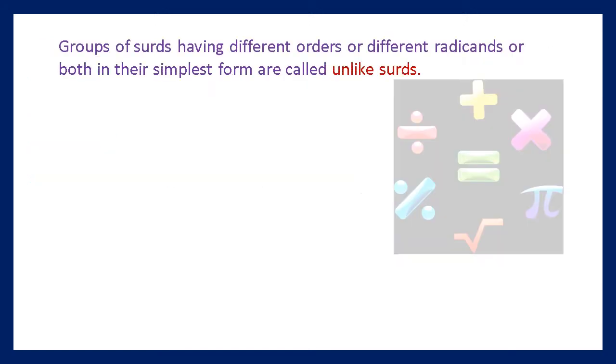Groups of surds having different orders or different radicands, or both, in their simplest form are called unlike surds.